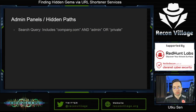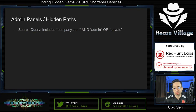Another obvious type of sensitive data is admin panels or hidden paths. If you can find a login panel, you can try default credentials or even conduct brute force attacks. Also, you can search for paths of software that has known vulnerabilities. The search query would include both company.com and 'admin' or 'private' or similar terms.